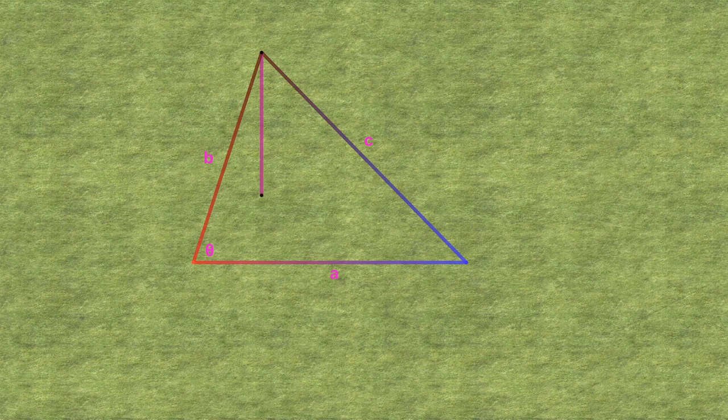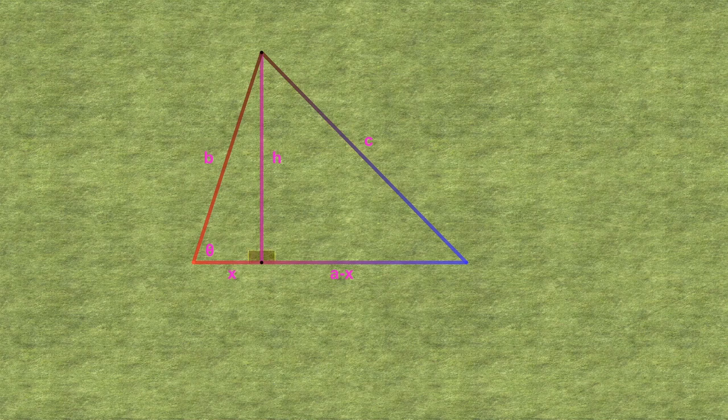Actually, if we draw a line with unknown length h from the one corner to the opposite side and perpendicular to the side, we find that we can construct two right-angled triangles from the original triangle, by splitting the side a with known length into two parts of unknown length x and a-x.